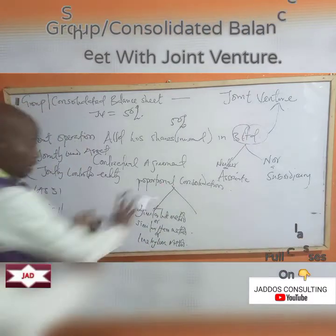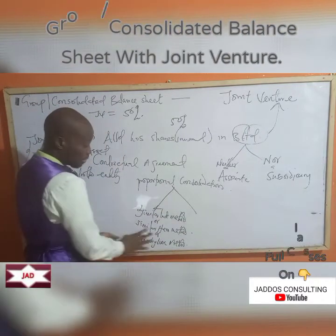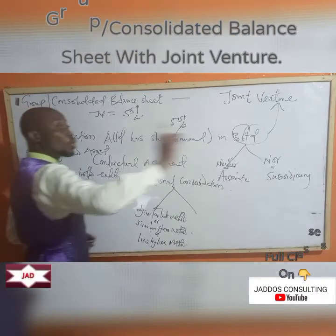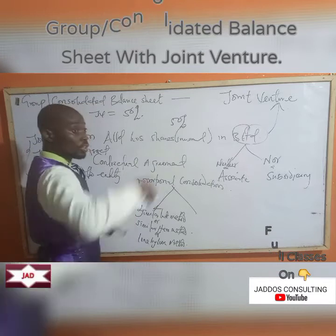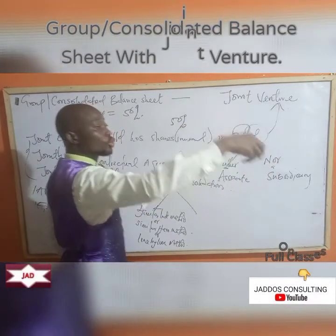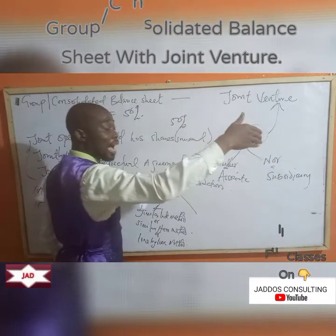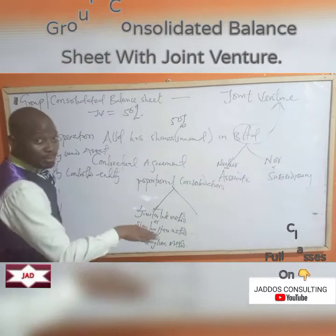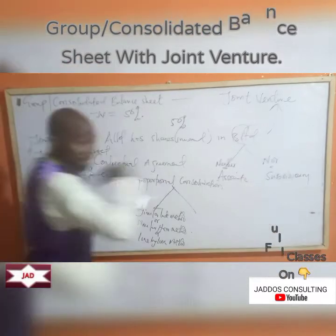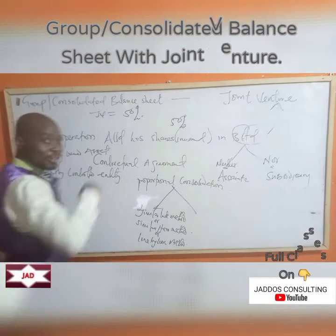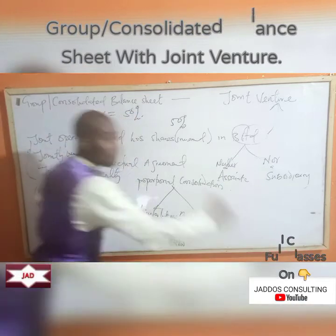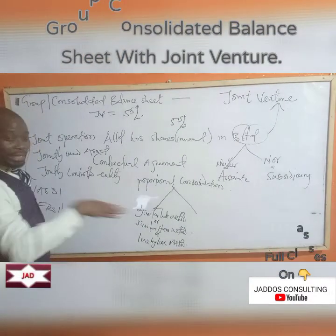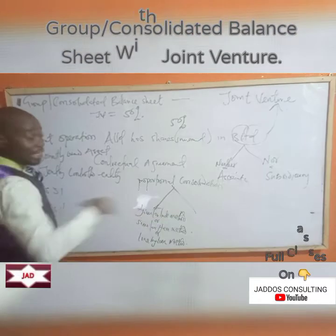Proportional consolidation can be reported using two approaches. The first is called the similar line method — also called the line-by-line method or similar item method. What this means is that you report the jointly controlled entity items in the group balance sheet combined with similar items. Fixed assets are reported together with fixed assets in the group balance sheet; furniture and fittings together with furniture and fittings.